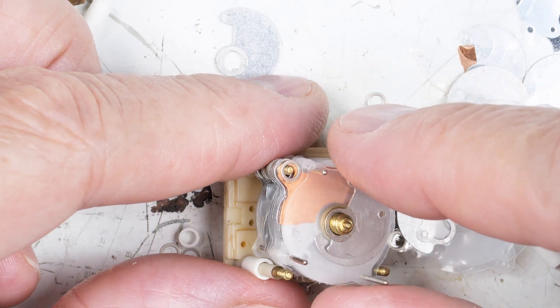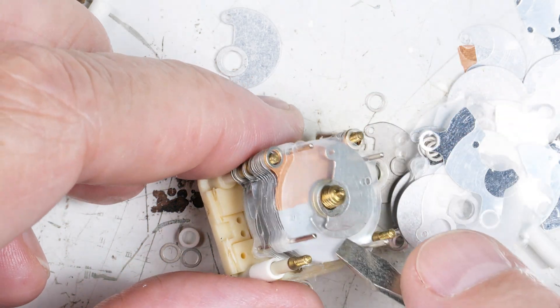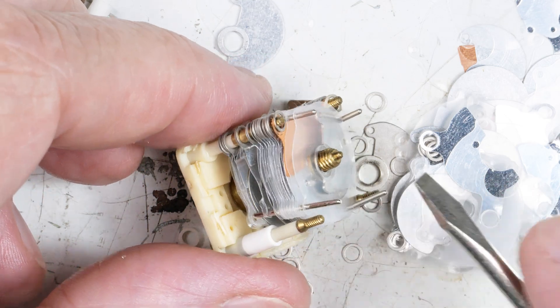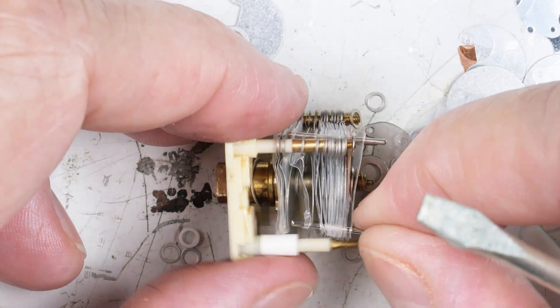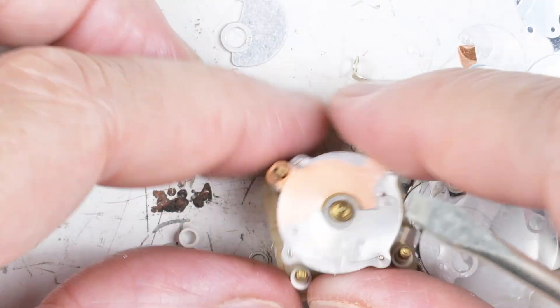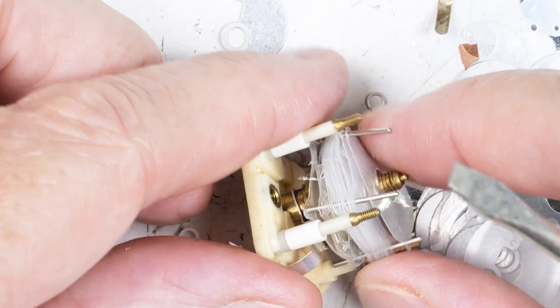So I suppose if I wanted a single 360, I could reassemble half of this, but I'm not going to. I respect my sanity more than that.